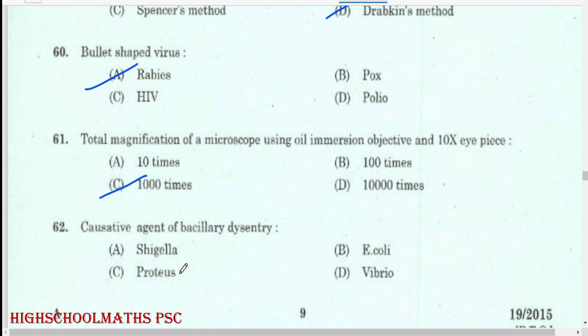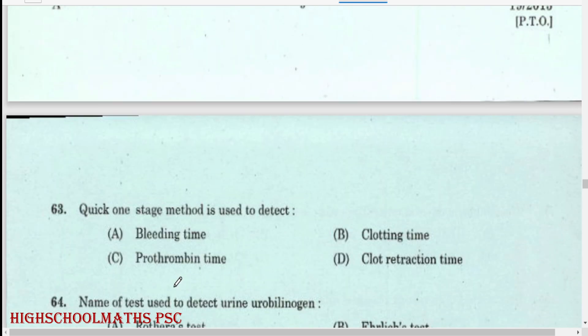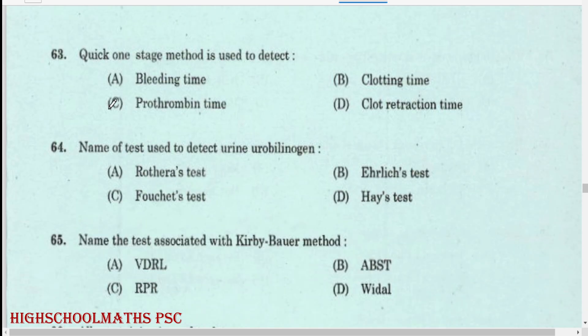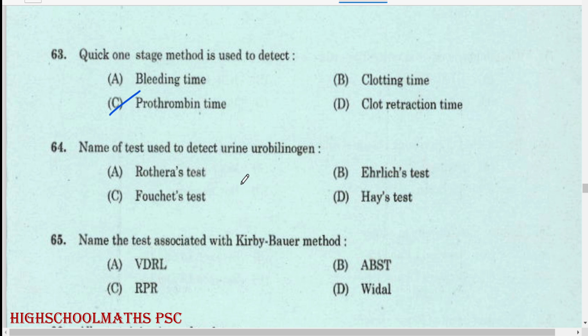Causative agent of bacillary dysentery: Shigella. Name of test used to detect urine urobilinogen: Ehrlich's test.